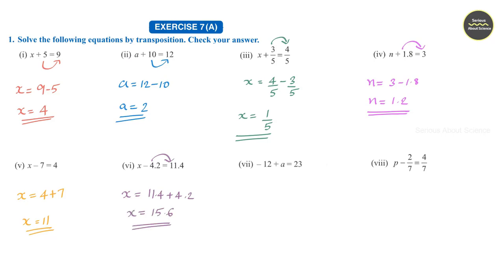Question number 7: minus 12 plus a is equal to 23. So this I can write as a is equal to 23 plus 12, and 23 plus 12 is 35.